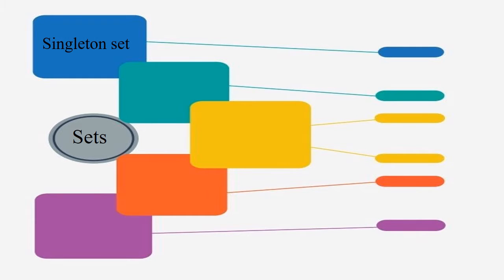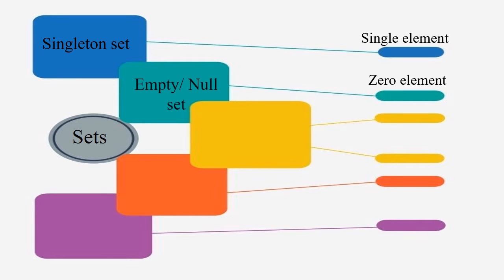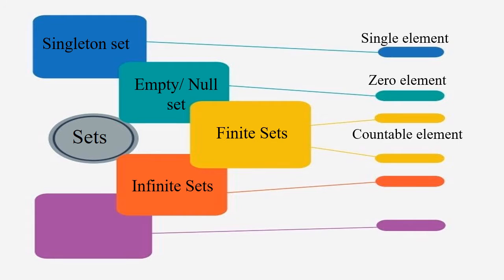The first one is singleton set, which means it contains only a single element — that is one element. If the set has zero elements, then that set is called a null set or empty set. Another set is finite set, which means the set contains countable elements. And the last one is infinite set — that is, a set containing uncountable elements.